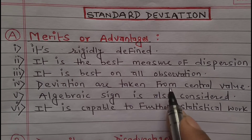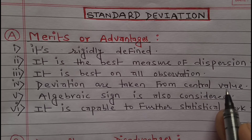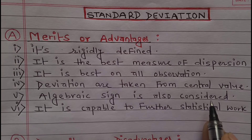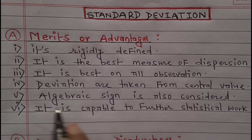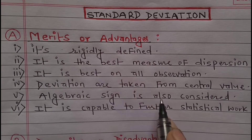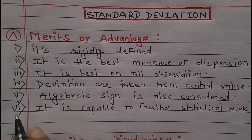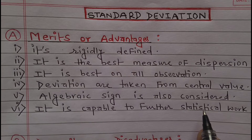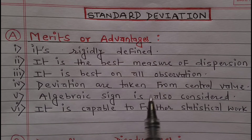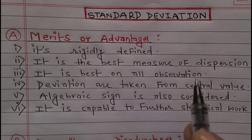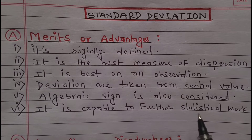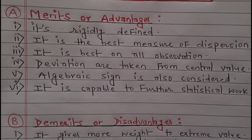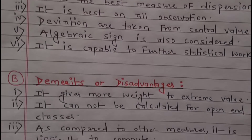Point four — deviations are taken from the central value. Point five — algebraic sign is also considered. Point six — it is capable of further statistical work. These are the advantages of standard deviation.